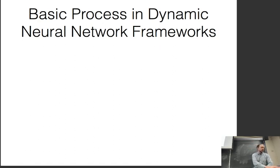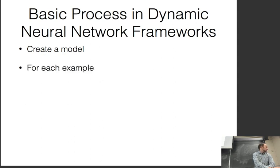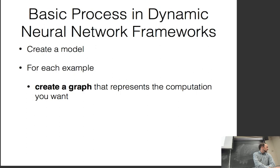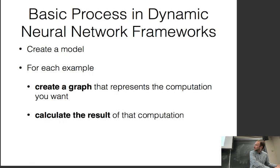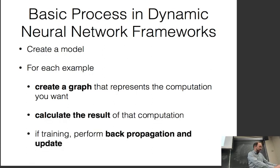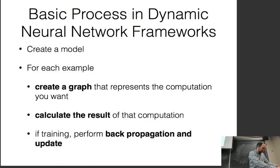The basic training process in a dynamic neural network framework: at the very beginning, you create a model and define your model parameters. Then for each training example, you create a graph that represents the computation you want to perform — analogous to the graph I talked about just now. You calculate the result of that computation, and if you're training, you perform backpropagation over the thing you want to minimize, then update the parameters. I'm going to pull up a concrete example of this in code. It's the first class, so I forgot to pull up the code example before we started, but I'll pull it up now.